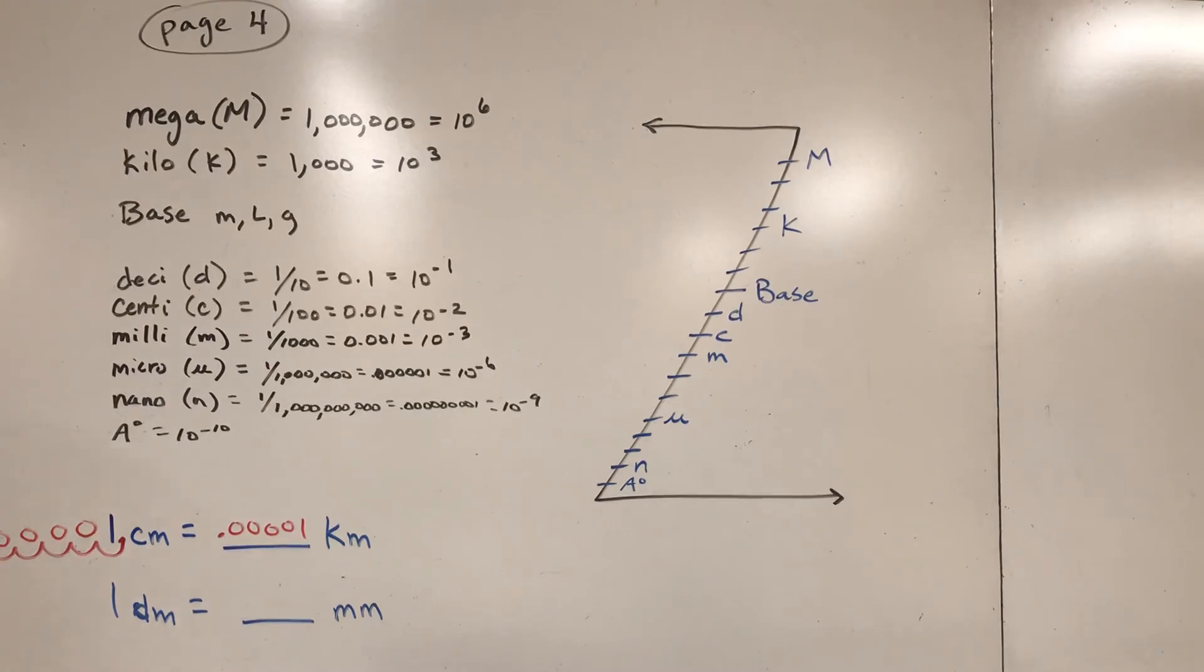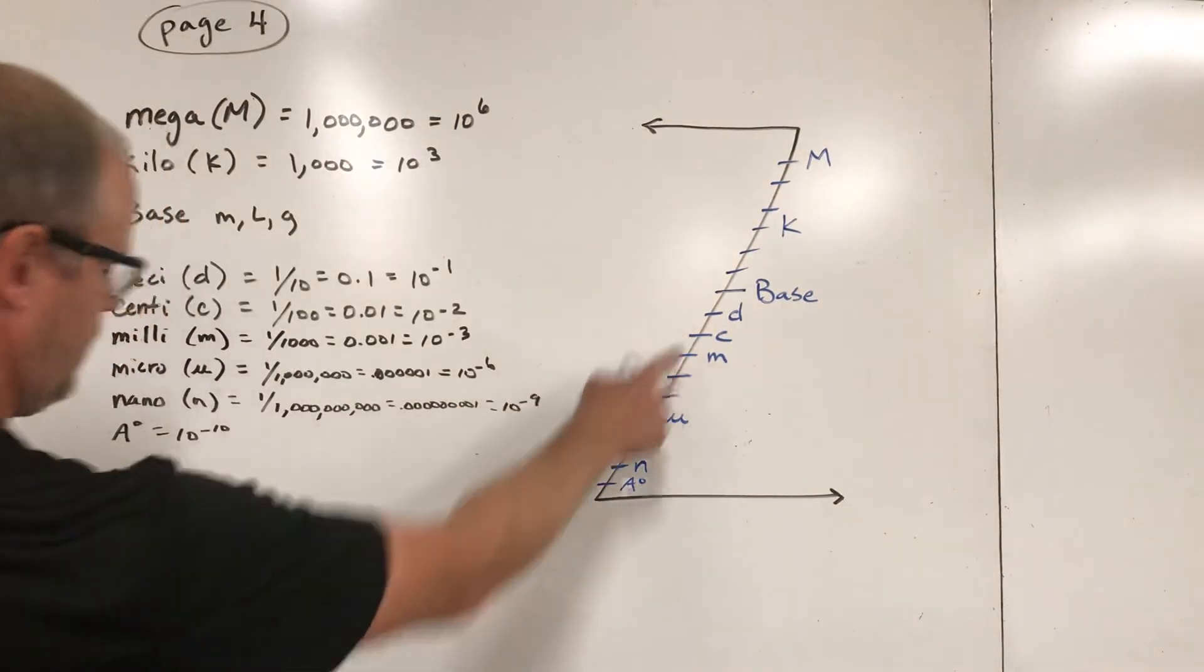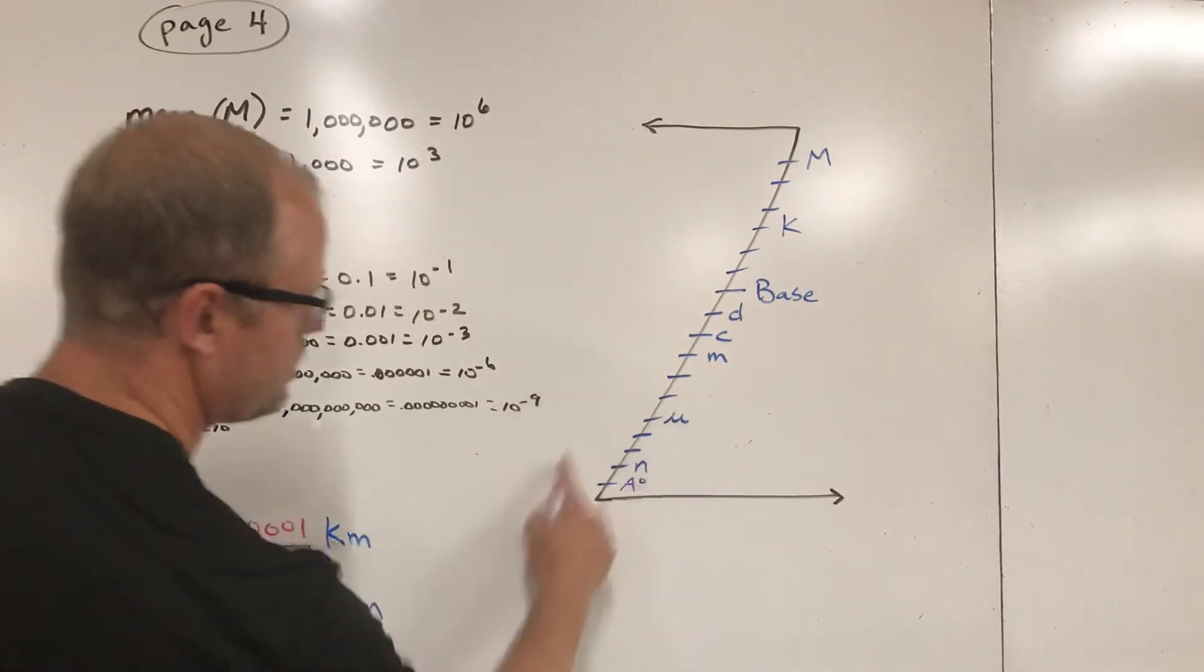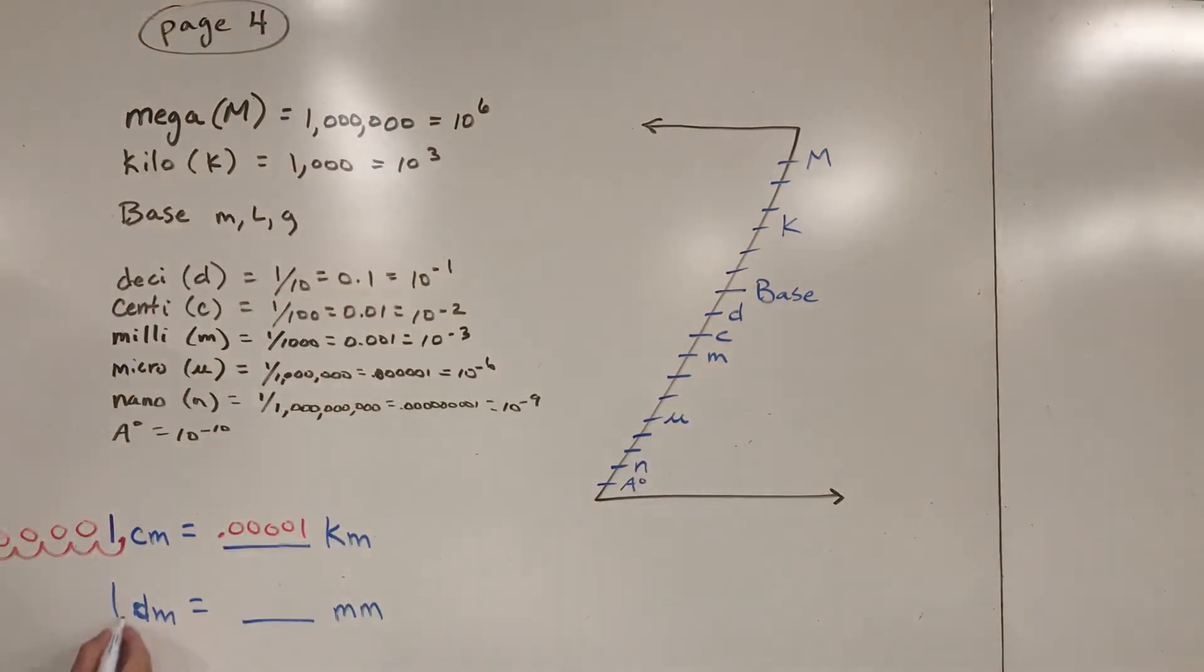Let's take a look down here. We have one decimeter equals how many millimeters? My measurement is one. Don't forget that. But now I'm going to take a look at this and go, all right, one desi. Desi's right here. I'm trying to turn into milli, which is only two steps below it. I'm going to move my decimal one, two spots to the right. So I take the decimal that was right after this one and go one, two spots to the right. So one decimeter equals a hundred millimeters.